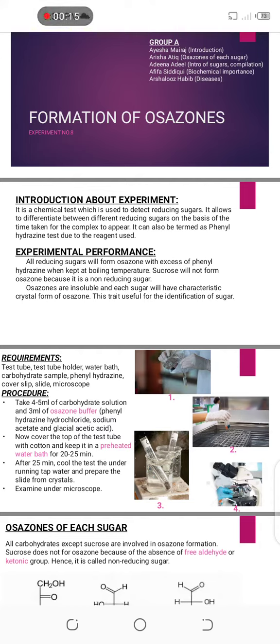Introduction. It is a chemical test in which we detect different types of sugar crystals and their shape. It allows us to differentiate between different reducing sugars on the basis of time taken for the complex to appear. All reducing sugars form crystals except sucrose, because it is a non-reducing sugar, and each sugar will have a characteristic crystal form of Osazone. It can also be termed as the phenyl hydrazine test.